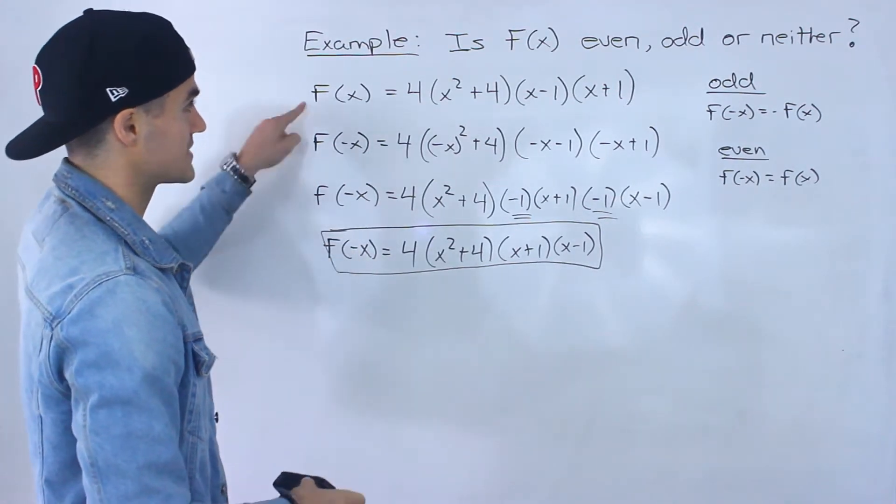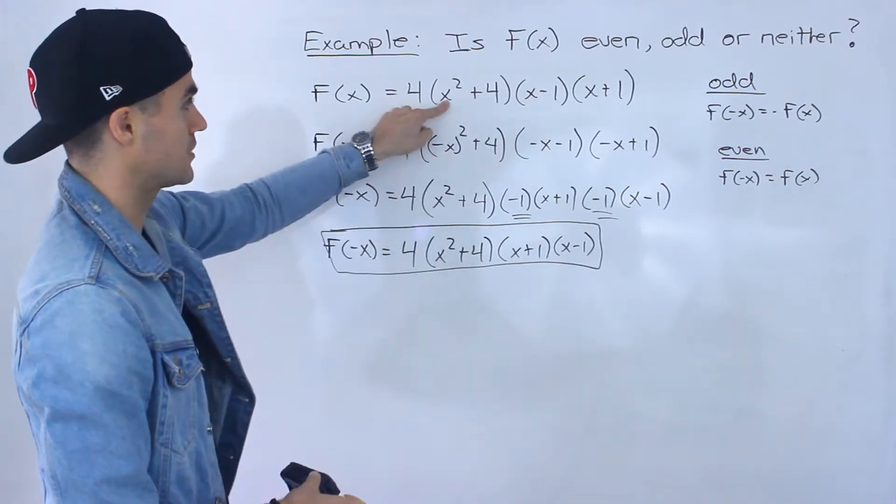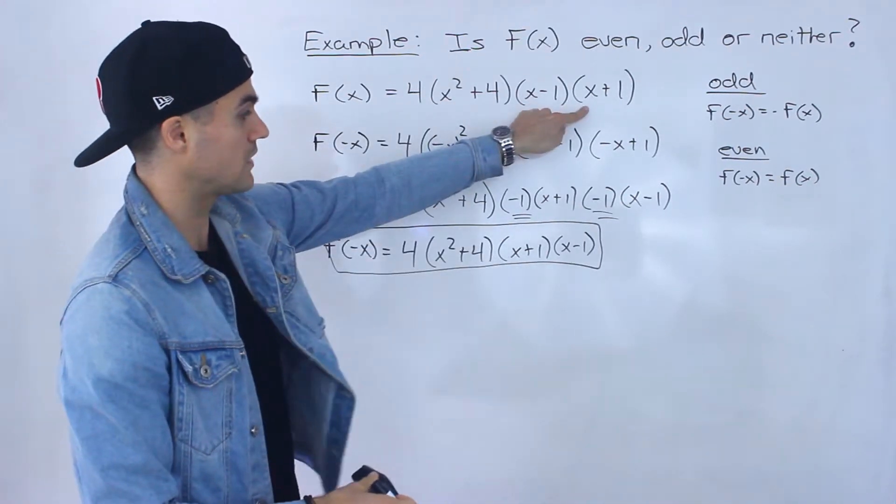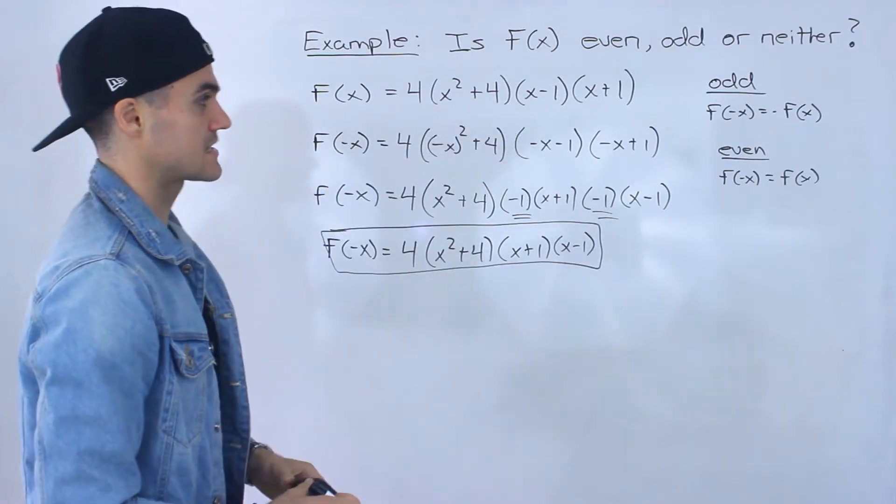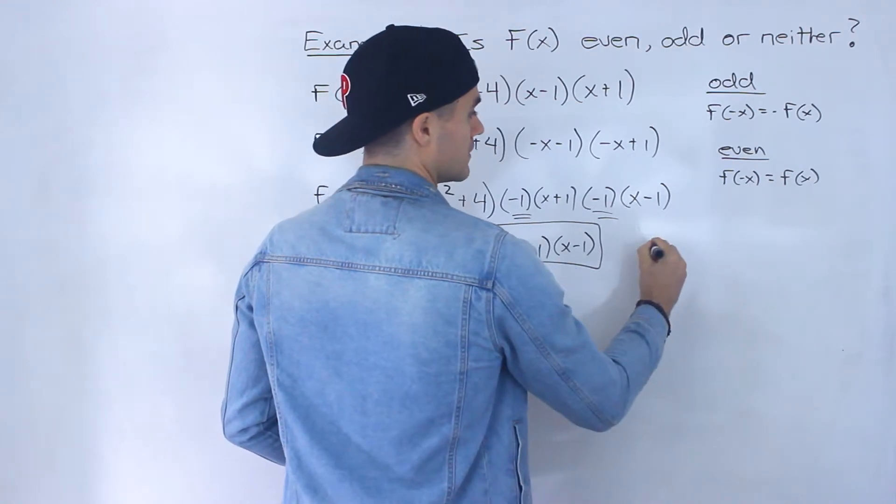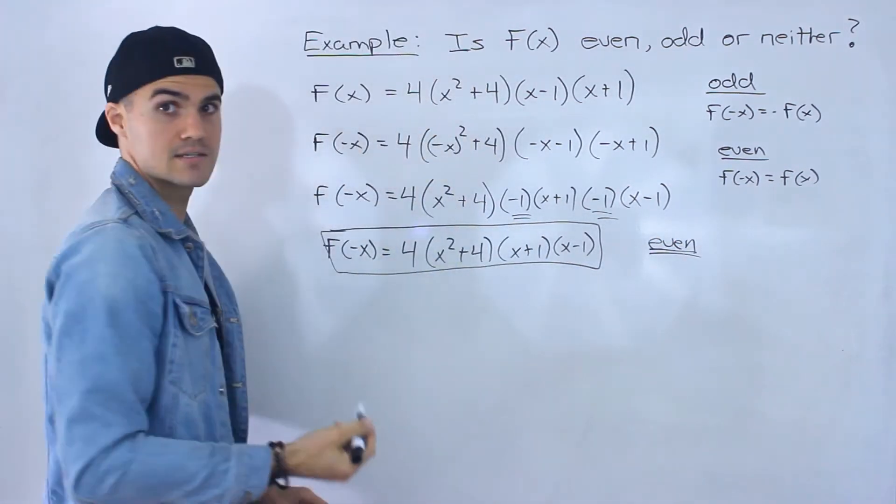And notice actually that f of negative x is equal to f of x, right? We've got the 4, got the x squared plus 4, got the x plus 1, and then we got the x minus 1. Right? It's the exact same function, so we know this equality holds. So just from that we can tell that the function is even.